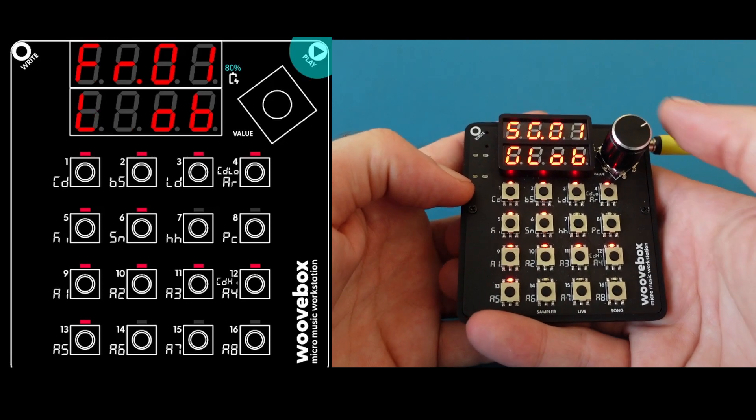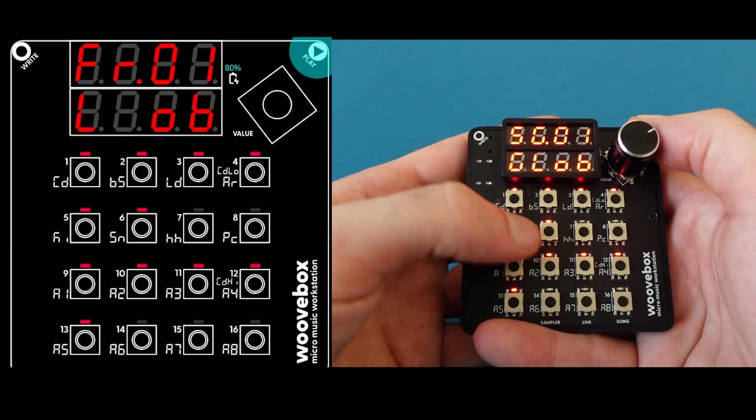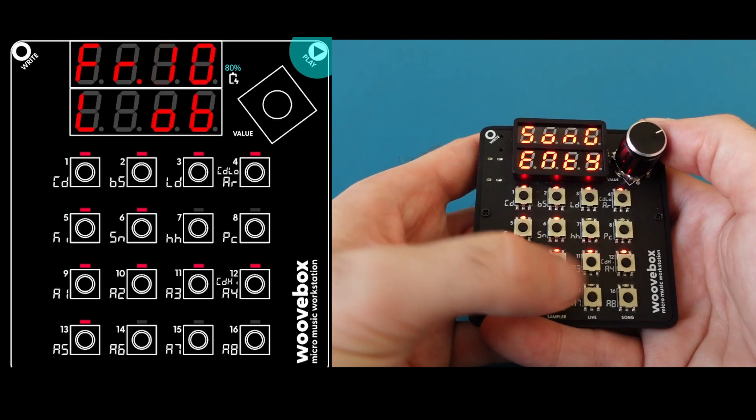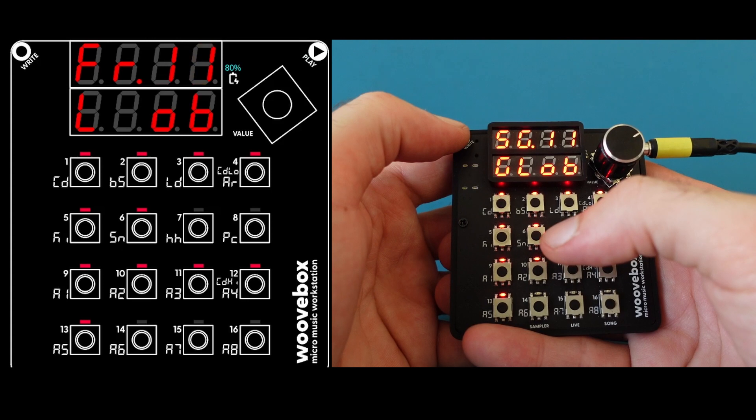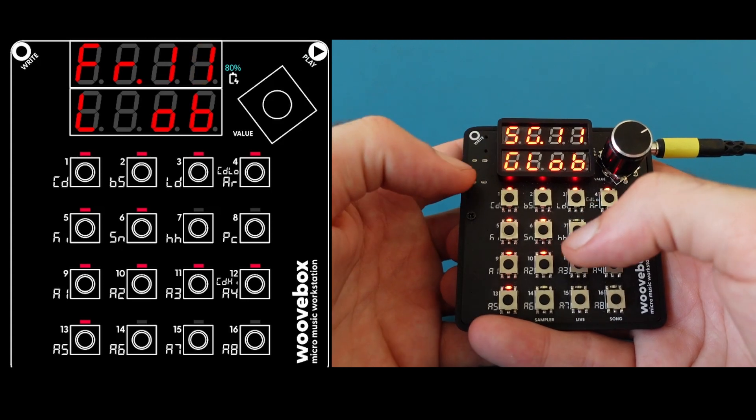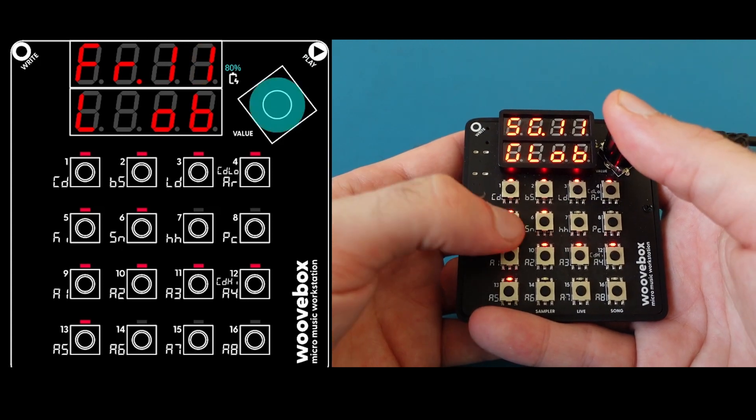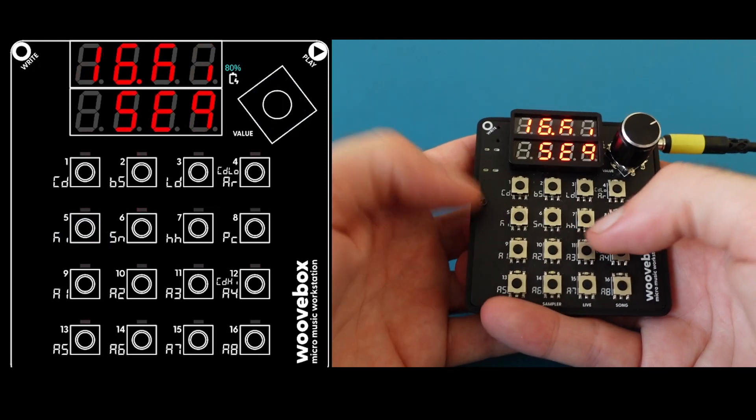So the first thing is to pick an empty song. You change song by holding play and clicking these buttons. Okay, so you can see 11 is empty. So I've just selected it. You can see it says song 11. And we're going to hold down the encoder and press the kick button. And now we're in the kick track.